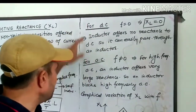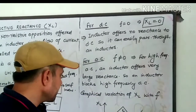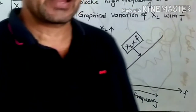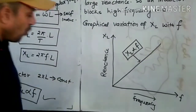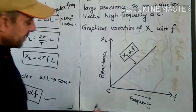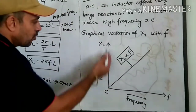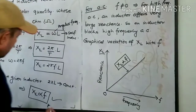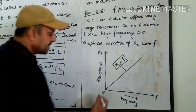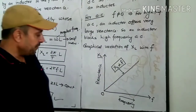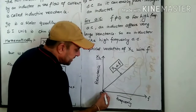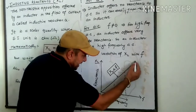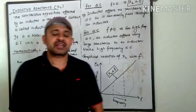This whole topic — that an inductor offers blockage to AC but passes DC very easily — is the answer to that board exam question. For the graphical variation of inductive reactance with frequency: on the x-axis we take frequency and on the y-axis we take inductive reactance. Since XL is directly proportional to f, the graph will be a straight line going through the origin. Zero frequency gives zero inductive reactance, and as frequency increases, inductive reactance keeps increasing.